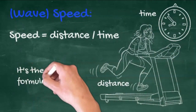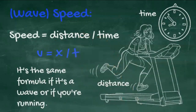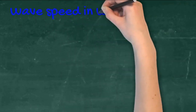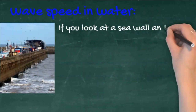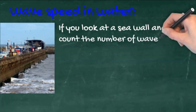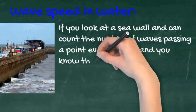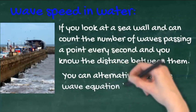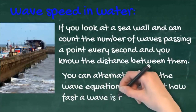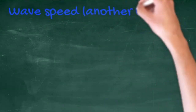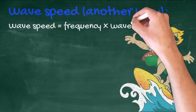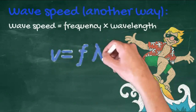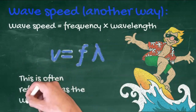It's the same equation whether you're measuring the speed of the wave or the speed of a runner. Alternatively, if you can count the number of waves passing a point every second from, say, a sea wall, and you know the distance between the waves, you can use the wave equation: wave speed equals frequency times wavelength, V equals F lambda.